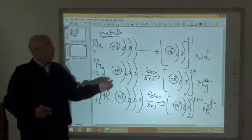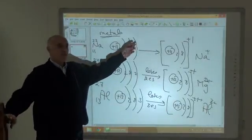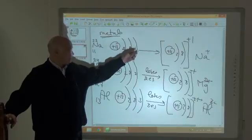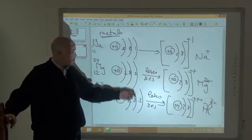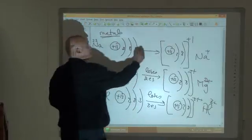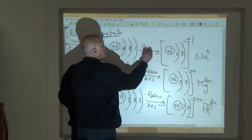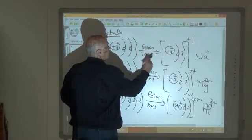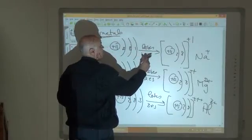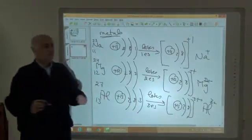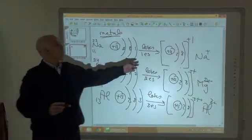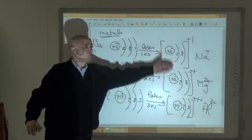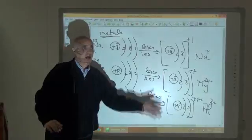As we know, the outermost energy level in metals contains one, two, or three electrons, and metals lose them in chemical reactions and change to positive ions.